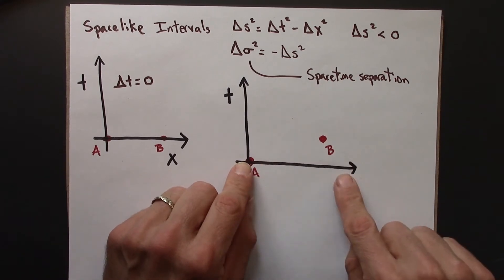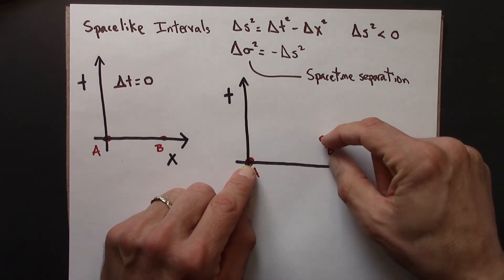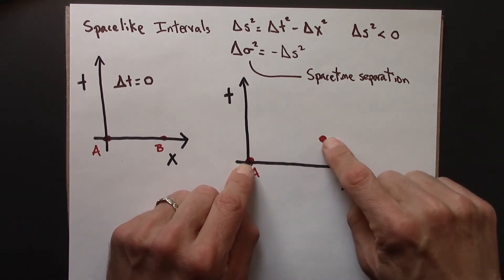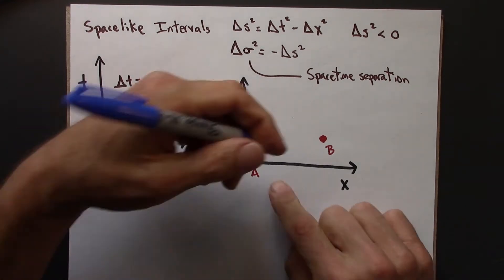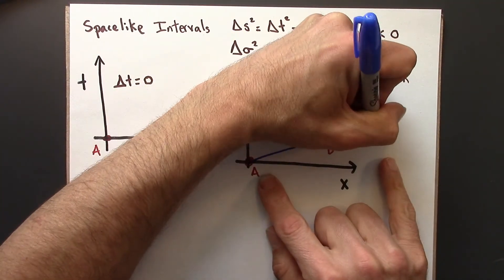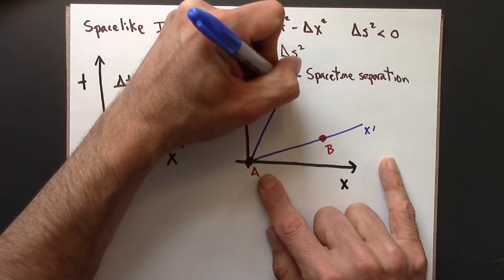But in this case, delta t is not zero. So A and B are not purely spacelike in that sense. But there's a reference frame, a moving reference frame, in which they would look like this.